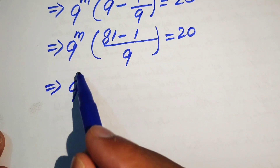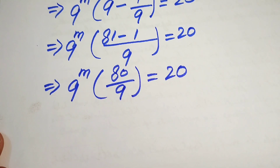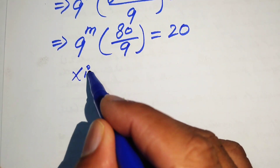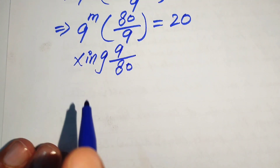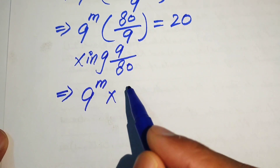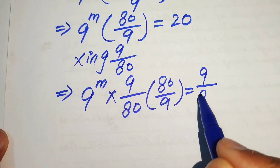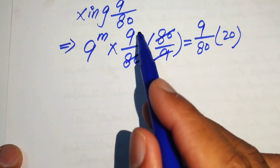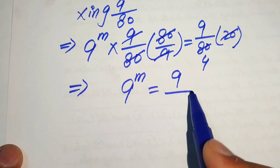After simplification it is written as 9 to the power of m into 81 minus 1 equals 80 over 9, and this whole equation equals 20. To isolate 9^m, we multiply both sides by 9 over 80, so 9^m multiplied by 9 over 80 into 80 over 9 equals 9 over 80 into 20. The 80s and 9s cancel, giving 9 to the power of m equals 9 divided by 4.